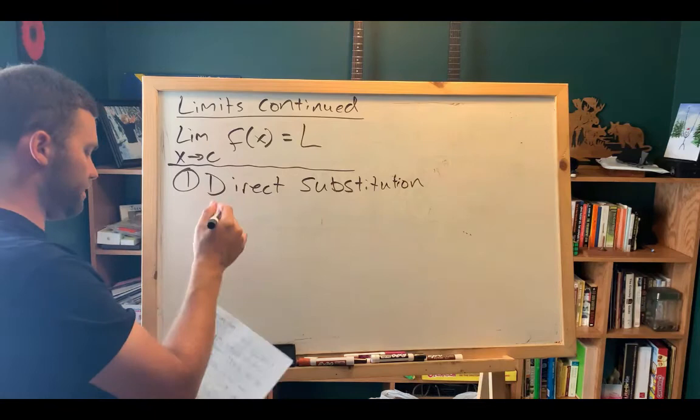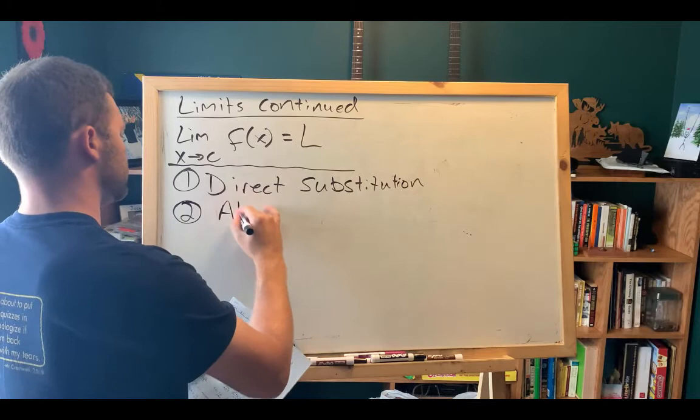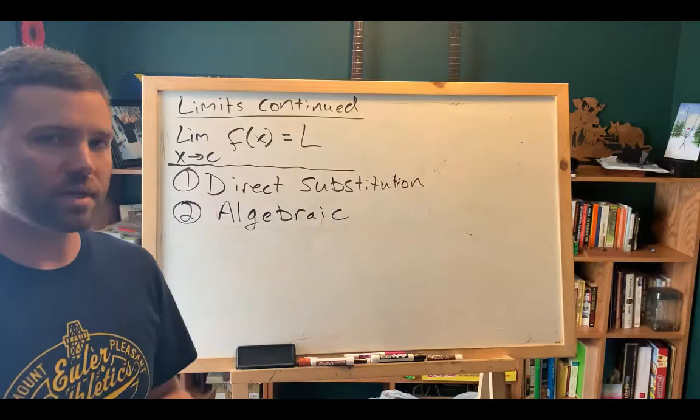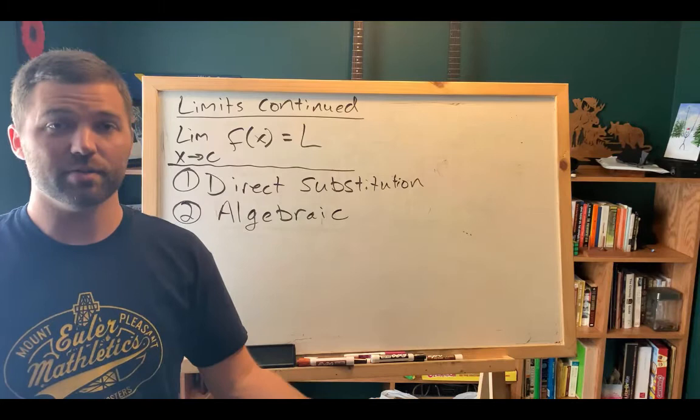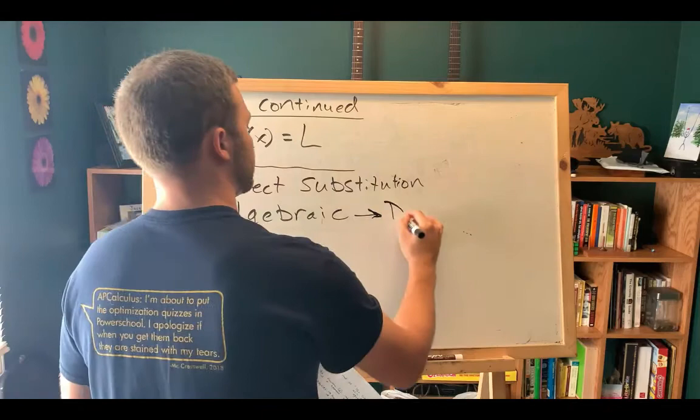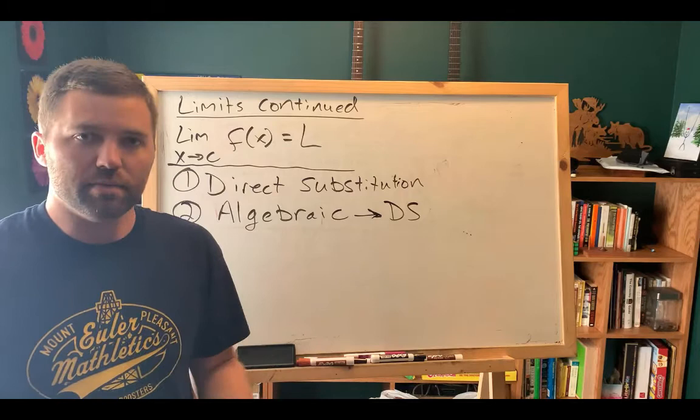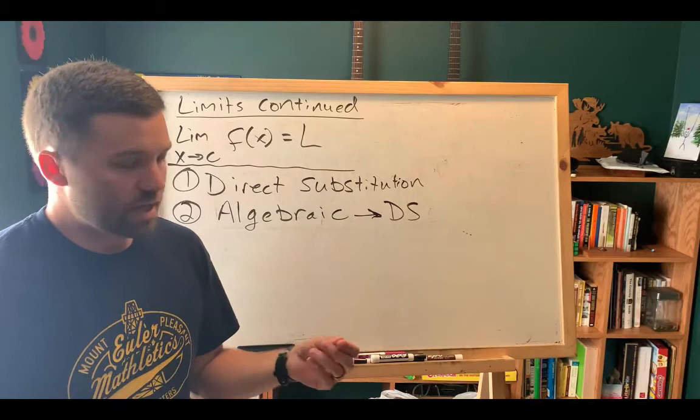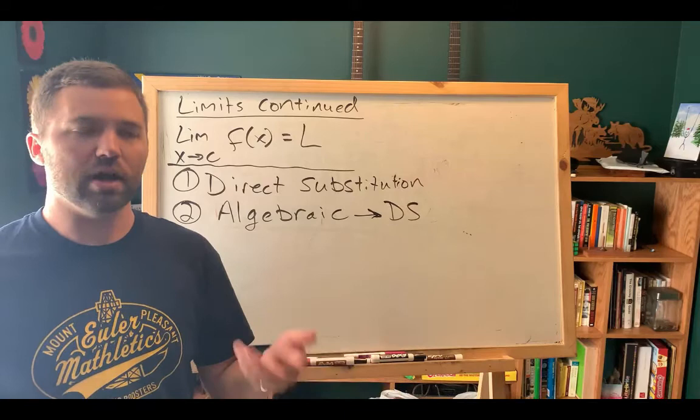Second thing you should try is algebraic manipulation. You do that because you might be able to do some algebraic manipulation to the function and then use direct substitution and evaluate the limit in that way. It gets you good at doing algebraic manipulation. The second reason is because there's a non-calculator portion of the AP test. And the third reason is that it will help you develop an intuition for how these functions work without jumping right to your graphing calculator.